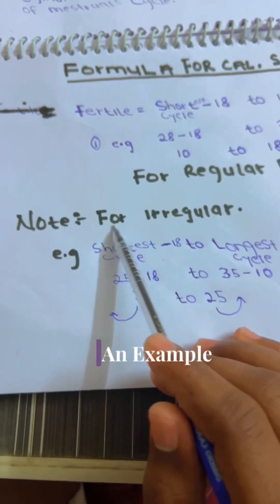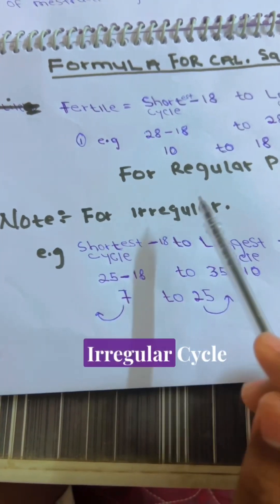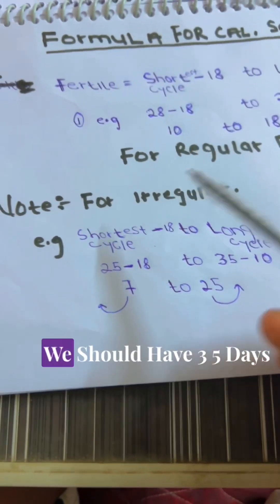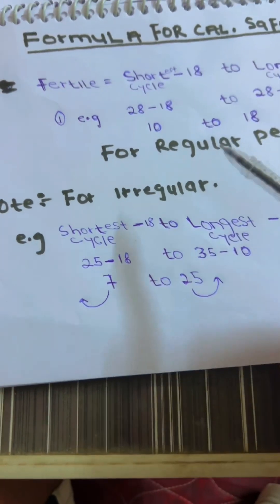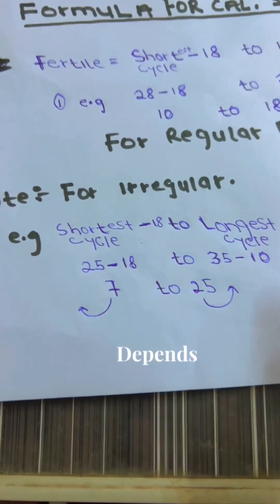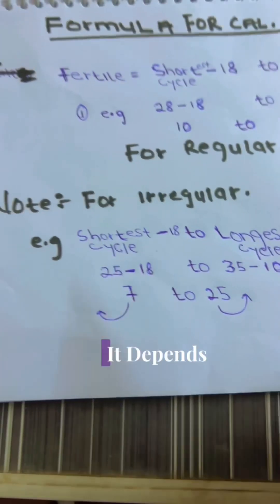And, this is an example for those that have a regular cycle. Those that have maybe, she will have 25 days, or she will have 35 days, or she will have 30 days or 32, it depends, or 20, it depends.